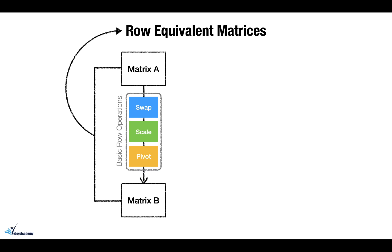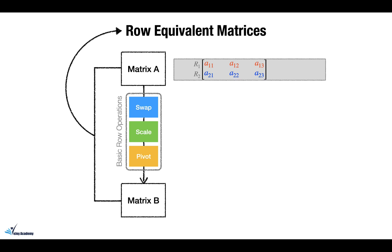These three operations are called basic row operations. To explain them, let's assume matrix A is a two-by-three matrix as shown here. When you apply the swap operation, you basically interchange one row with another. Here, the first row and second row are interchanged.